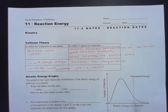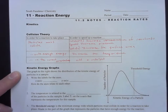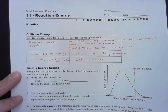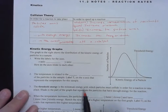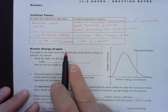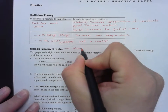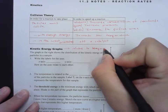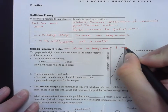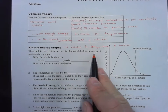We're going to look at two different graphs. The kinetic energy graph is the more difficult one, in my opinion, compared to the potential energy graph. While we're doing this, keep in mind that kinetic energy relates to temperature and motion. The graph shows the distribution of kinetic energy of particles in a sample — we're talking about the temperature and the amount of motion of these particles.